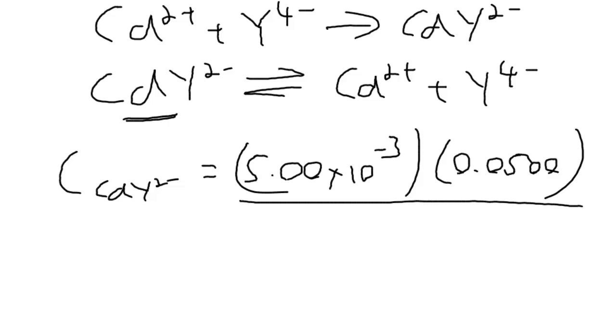And then the total volume, we start off with 50 milliliters, we've added another 25 to get to the equivalence point because the concentration of EDTA was double the concentration of cadmium. So that's going to be 0.075 and we end up with our initial concentration of cadmium equal to 3.33 times 10 to the minus 3 molar.